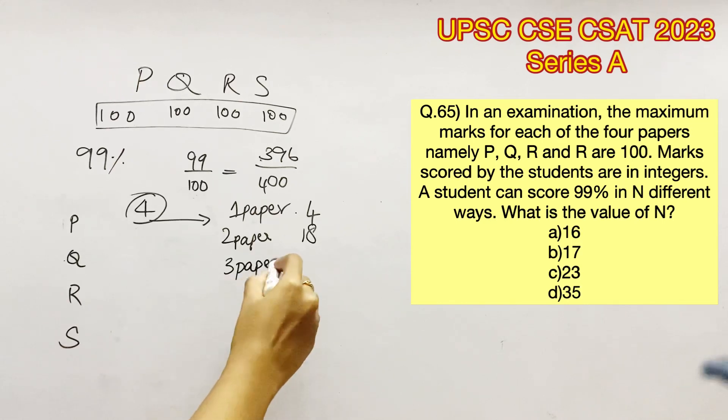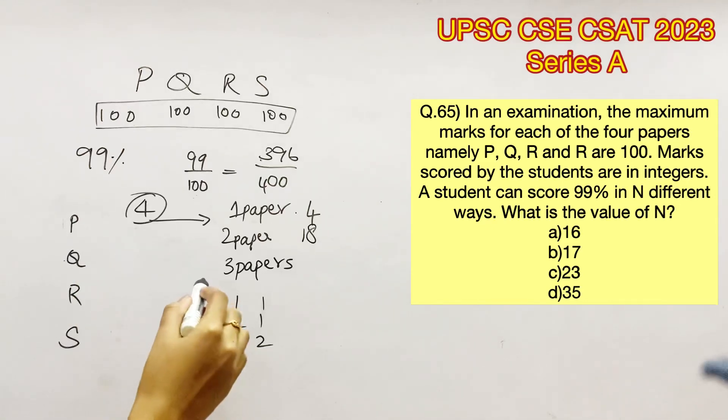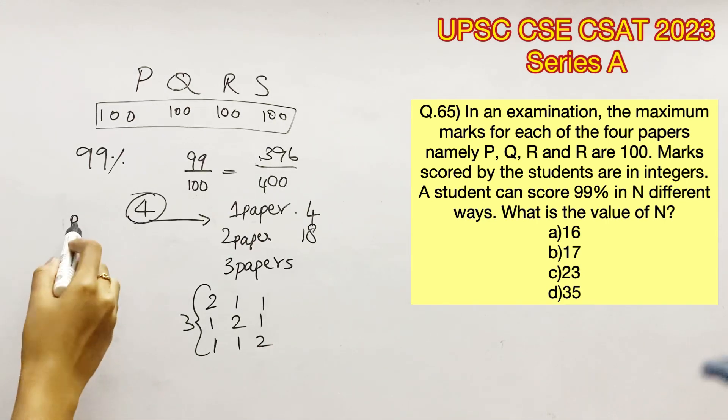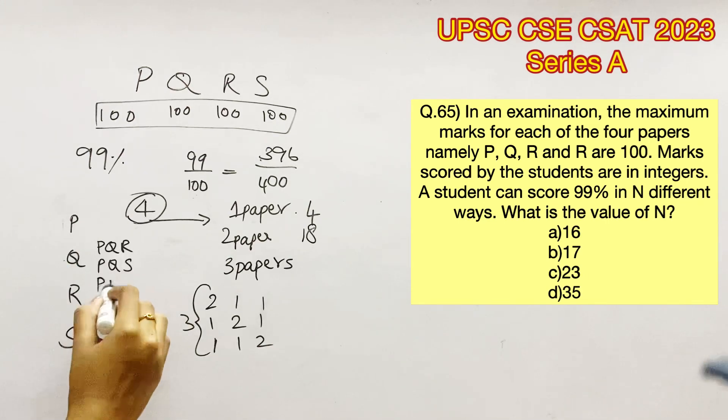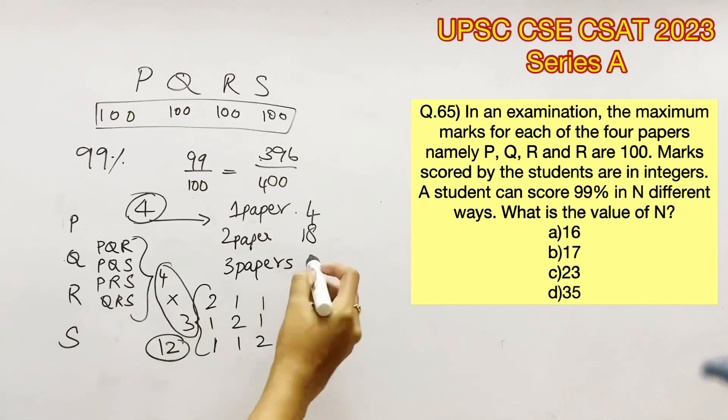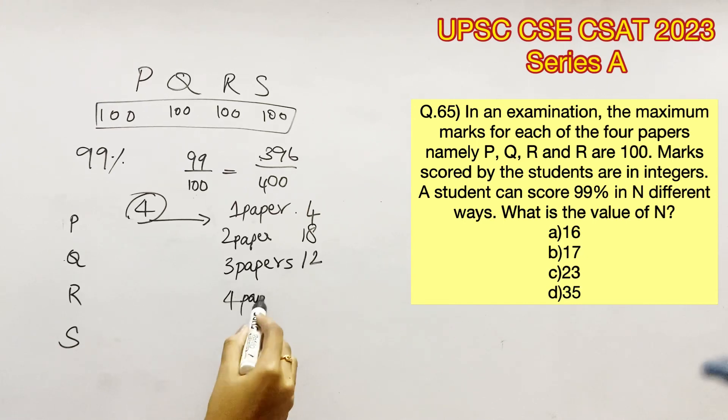For three papers, the marks can be lost in three different ways, which can be two in the first paper, one in the second and third paper, one in the first, two in the second and one in the third, or one in the first, one in the second and two in the third. So there are three different ways in distribution of the numbers. Now we can take the sets of three that are possible. It will be P-Q-R, P-Q-S, P-R-S and Q-R-S, which means there are four different ways. Therefore, let's multiply four and three, that is 12. So the marks can be lost in three papers in 12 different ways.